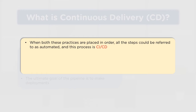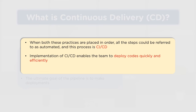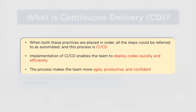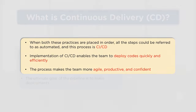When both CI and CD practices are placed together in order, all the steps form a complete automated process known as CI/CD. The end result is build and deployment automation — taking care of build, test case executions, and deployments together. The implementation of CI/CD enables teams to build and deploy quickly and efficiently with no manual effort, no scope for human error, and makes teams more agile, productive, and confident.